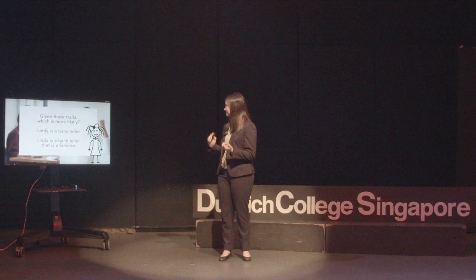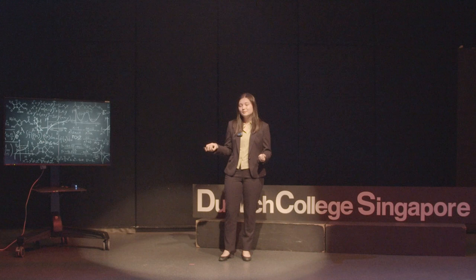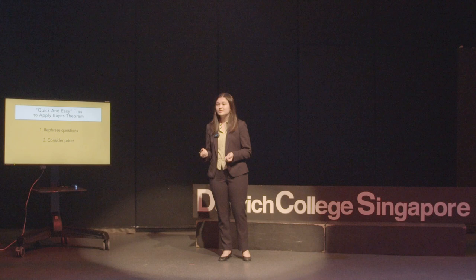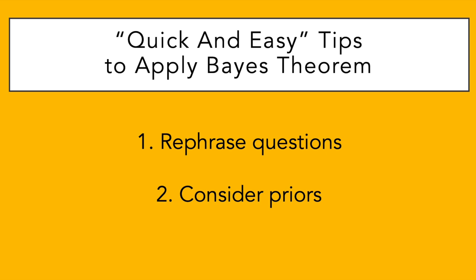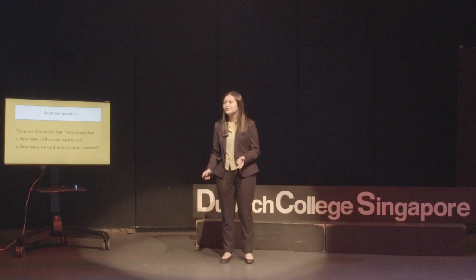We don't really have the time to plug in all the maths from Bayes theorem in this example, so what I'm going to do is simplify Bayes theorem's basic ideas into two ways you can apply it to your everyday life. The first way is to rephrase a question, and the second way is to consider your priors.